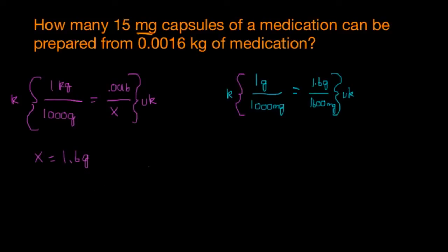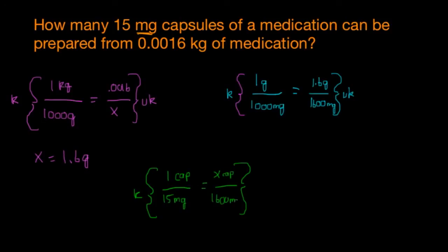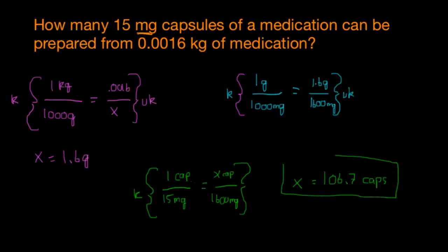This is the final step. We set up fraction equals fraction with our knowns and unknowns. If 1 capsule equals 15 milligrams, then how many capsules are in 1,600 milligrams? When we cross-multiply and divide, X equals 106.7 capsules. That is how many capsules we can fill with 0.0016 kilograms — that's our final answer for that question.